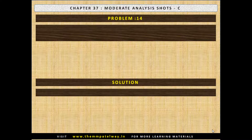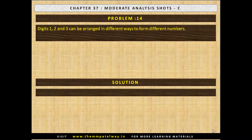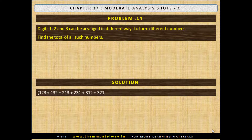Problem No. 14. Digits 1, 2 and 3 can be arranged in different ways to form different numbers. Find the total of all such numbers. The different numbers are 123, 132, 213, 231, 312 and 321, and the total will be 1332.